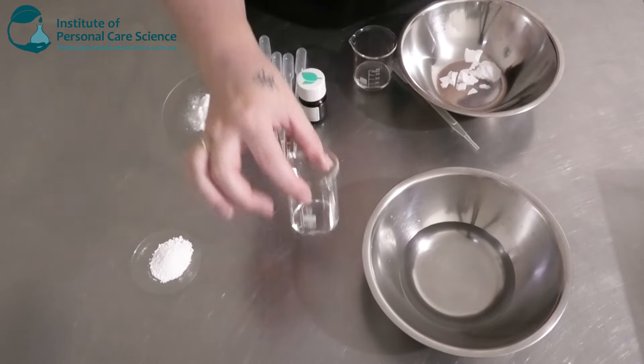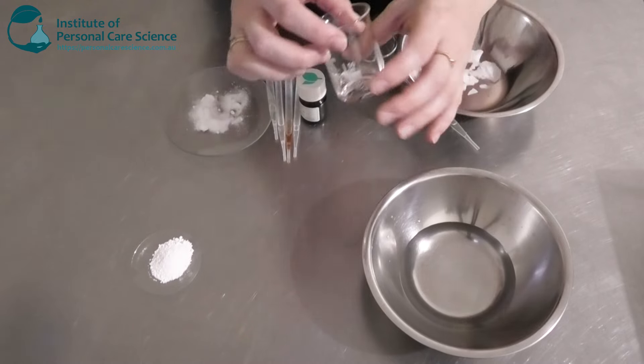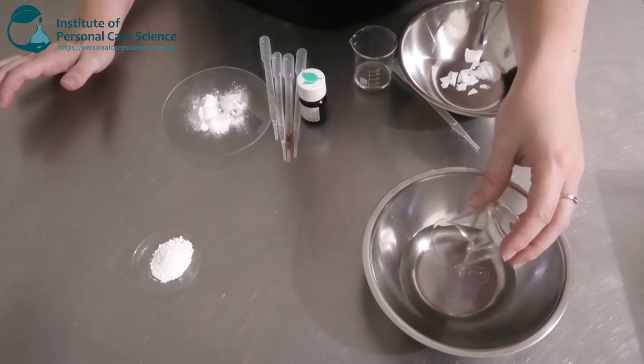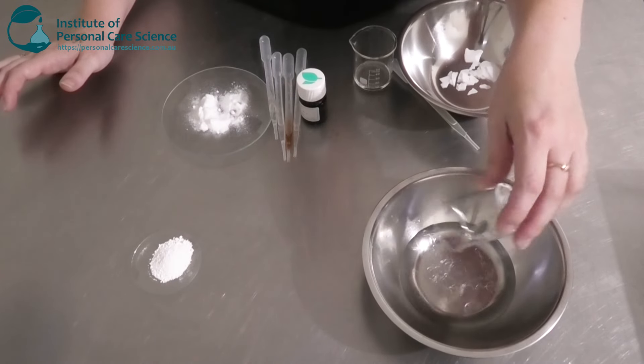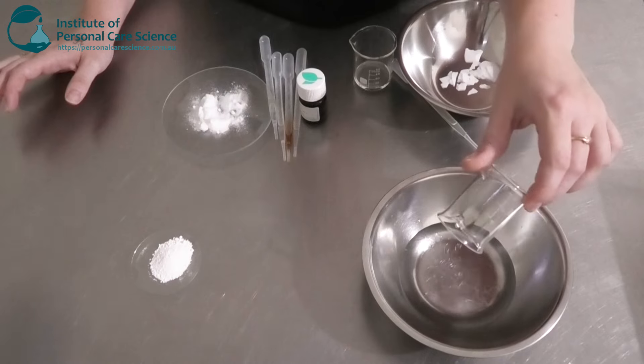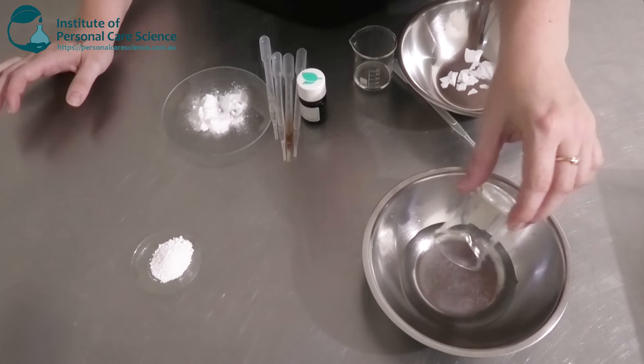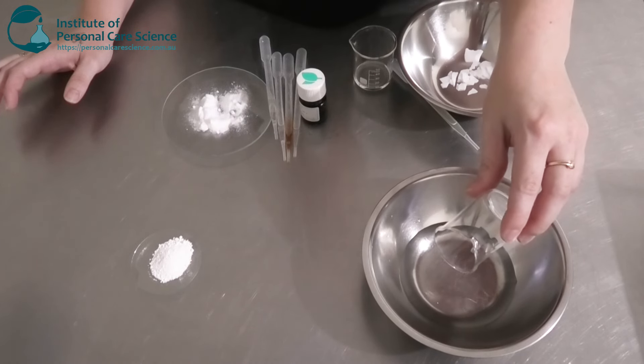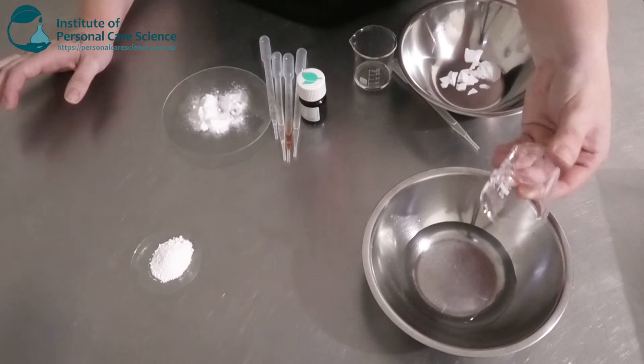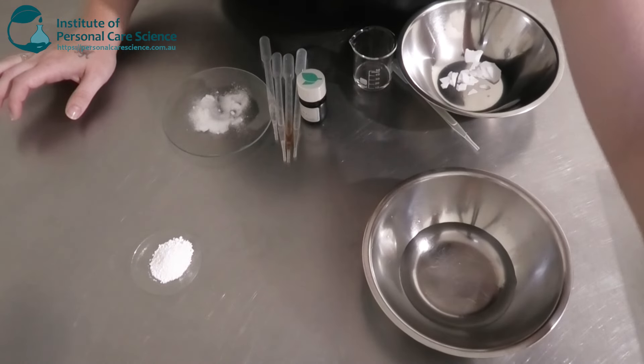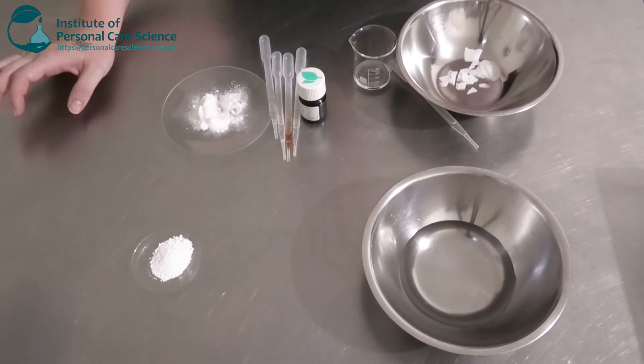So firstly I've got my water. To this I'm going to add a little bit of glycerin. You can of course pick another humectant of your choice. Propanediol might be a good choice as well if you don't want any stickiness or tackiness. If you do pick glycerin, limit it to about five percent in a leave-on product as it will feel sticky and tacky.